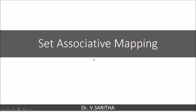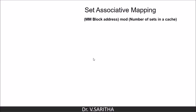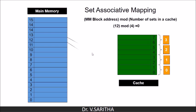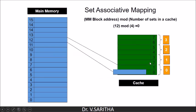In this video we are going to learn about set associative mapping. In set associative mapping, the formula is: main memory block address mod number of sets in the cache. The complete blocks in the cache are divided into sets, each containing a number of blocks. For example, to bring the 12th block into a cache with 4 sets: 12 mod 4 equals 0, meaning set 0.